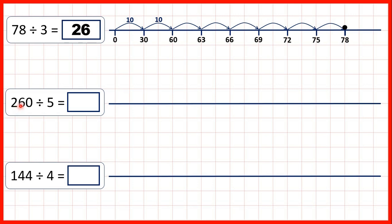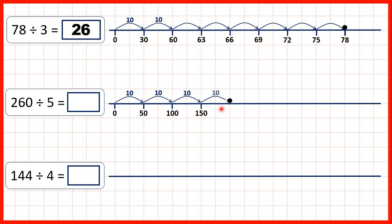Now we have 260 divided by 5. Again it would take a very long time to count up in steps of 5. So we make one jump of 10 times 5, which is 50. But 50 isn't very close to 260, so we make another jump of 10 times 5 to get to 100, then 150, then 200, then 250. Now we're close to 260 — we just need another 5 to get to 255, and then one more jump takes us to 260.